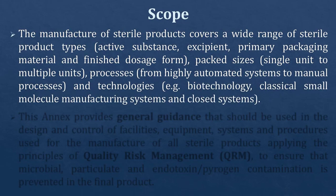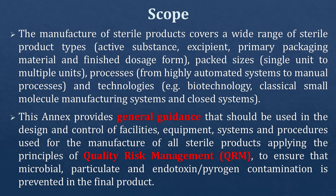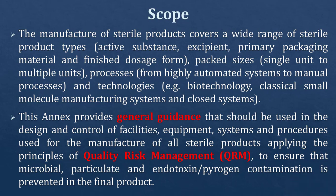The manufacture of sterile medicinal products covers a wide range of sterile product types: active substances, excipients, primary packaging material, and finished dose forms. Pack sizes range from single units to multiple units, and processes range from highly automated systems to manual processes and technologies - for example, biotechnology, classical small molecule manufacturing systems, and closed systems. This annex provides general guidance that should be used in the design and control of facilities, equipment, systems, and procedures used for the manufacture of all sterile products.